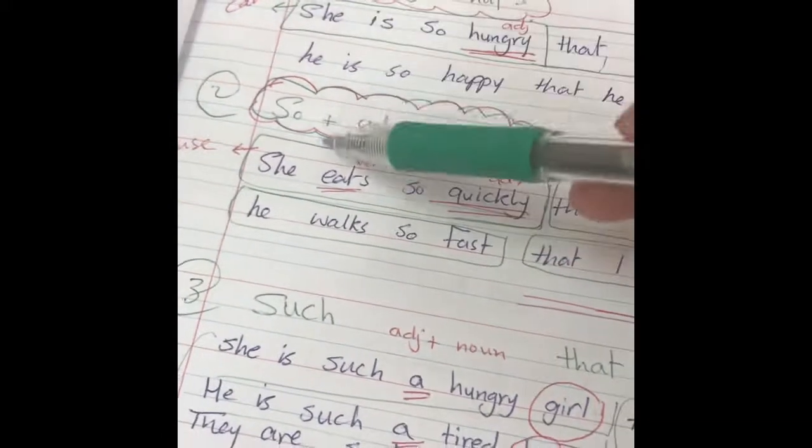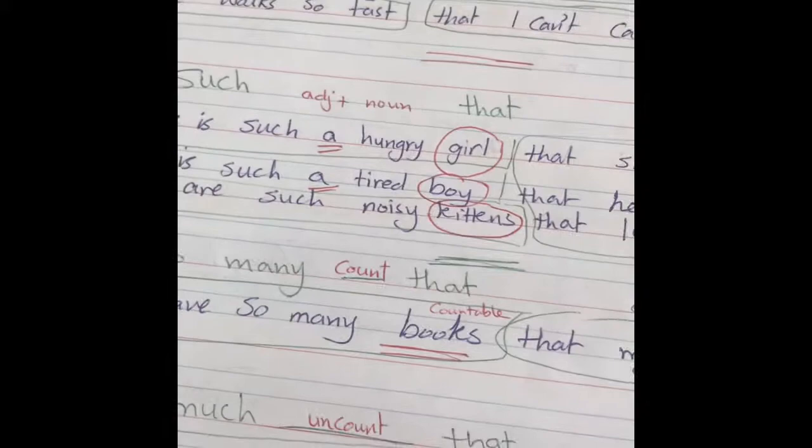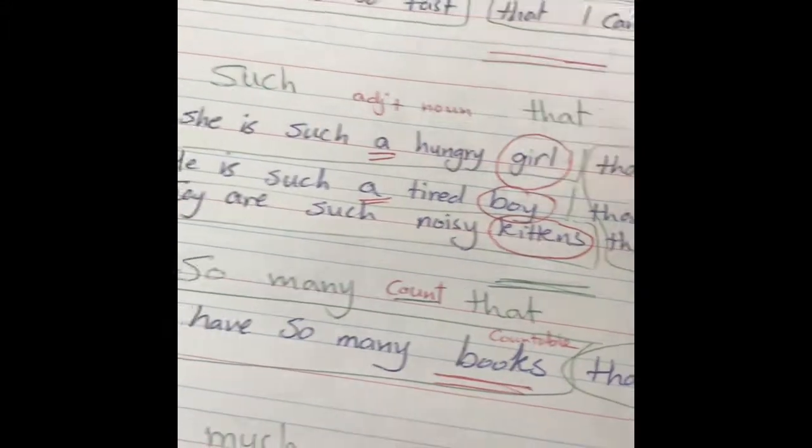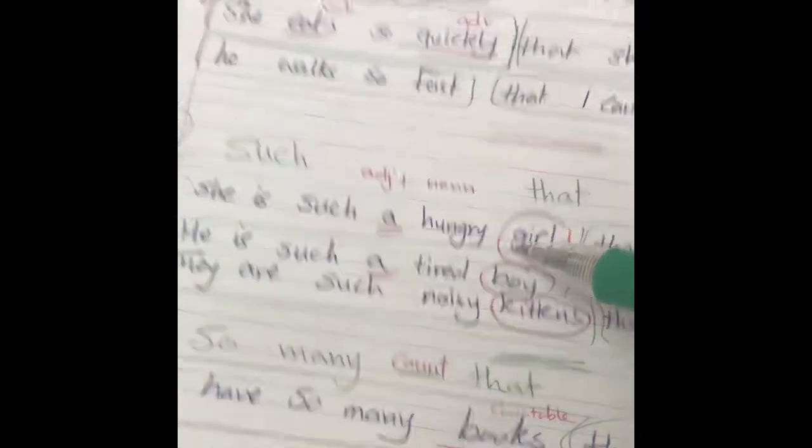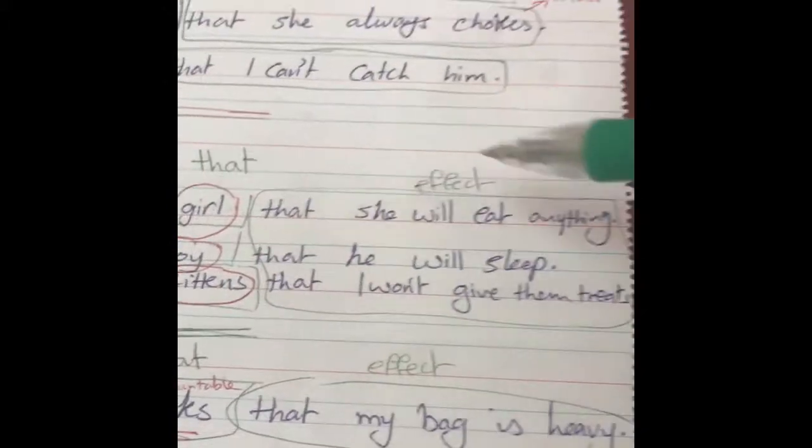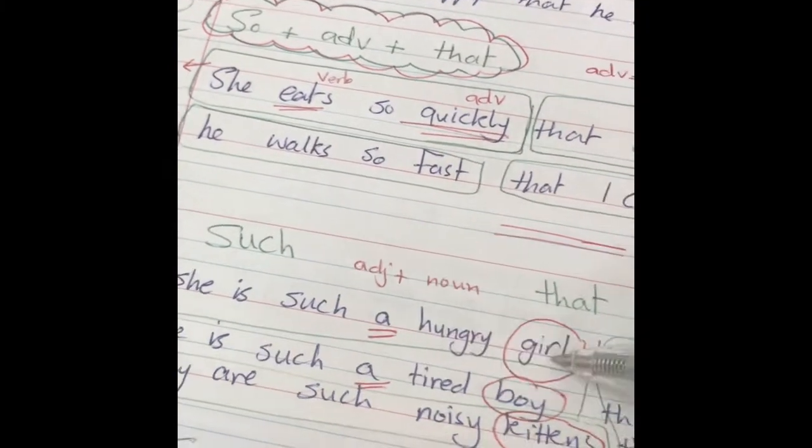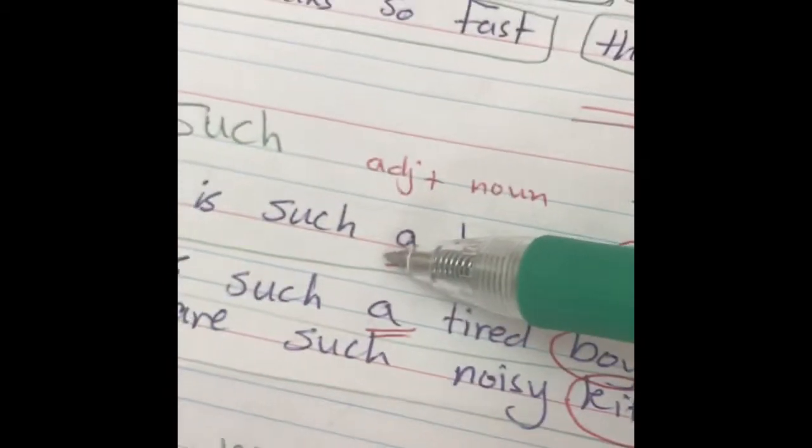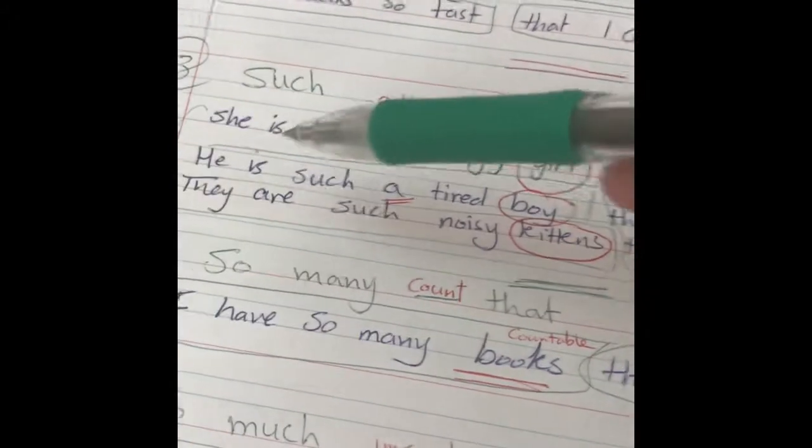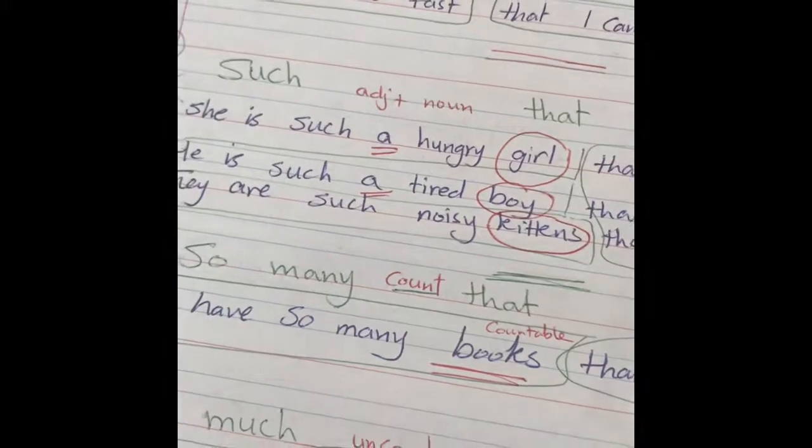Using such. Such is different. The cause and the effect are the same thing, but it's different because such I use it with adjective and there's a noun after the adjective. Let's see. She is such a hungry girl. Here, she is so hungry. Here, she is such a hungry girl that she will eat anything. The same effect, that she will eat anything. The difference is if I have hungry girl, I have a noun after the adjective, I use such. He is such a tired boy that he will sleep.